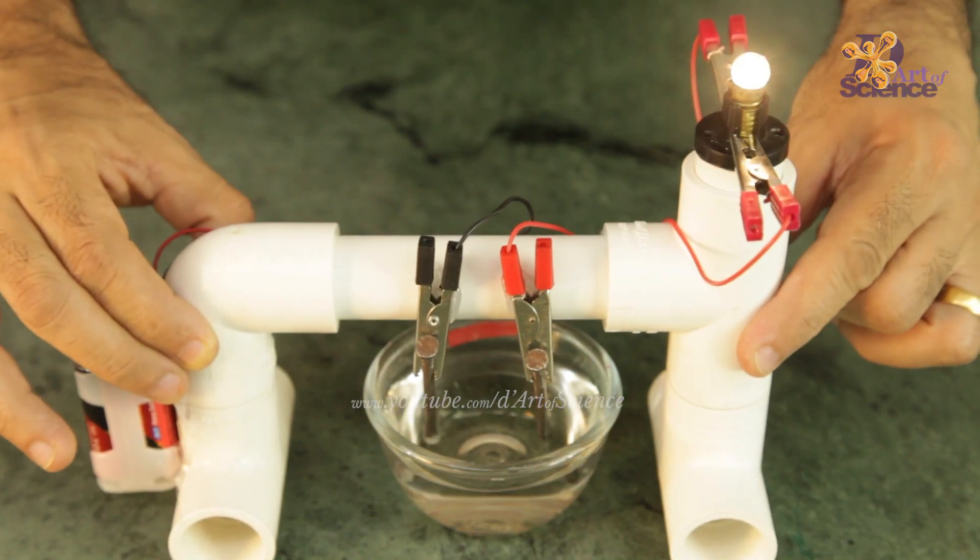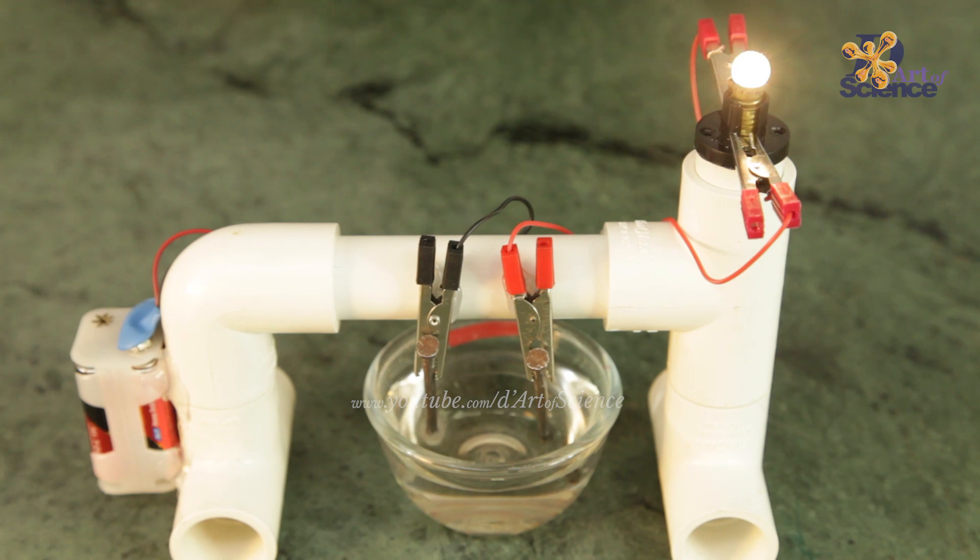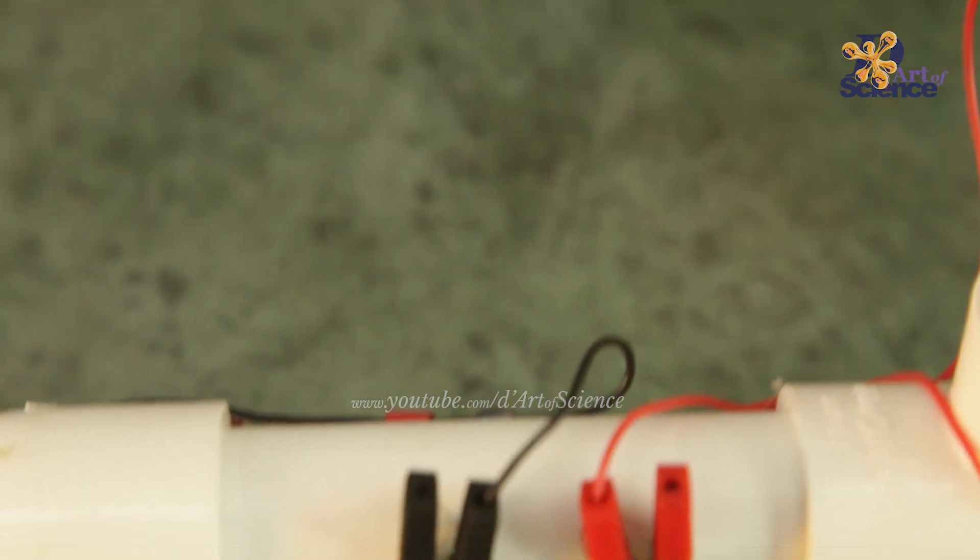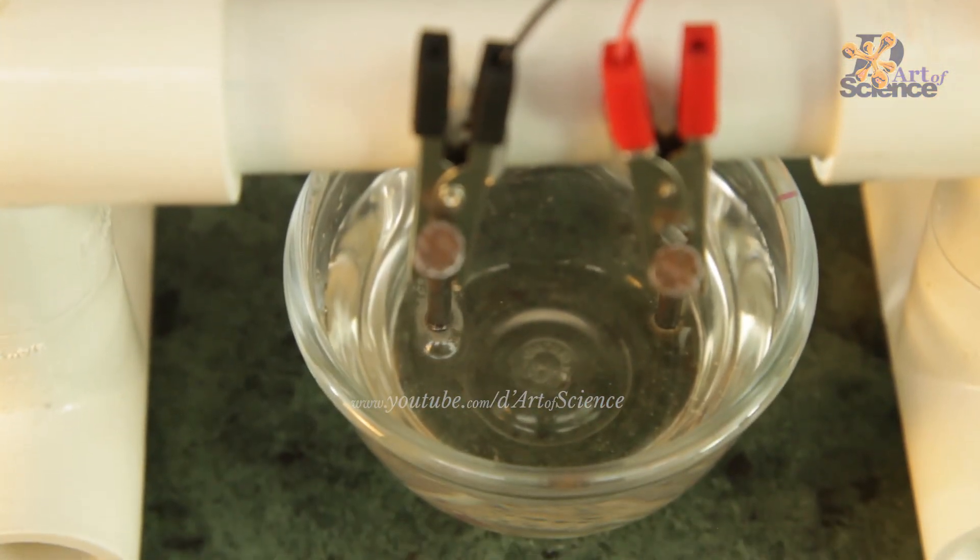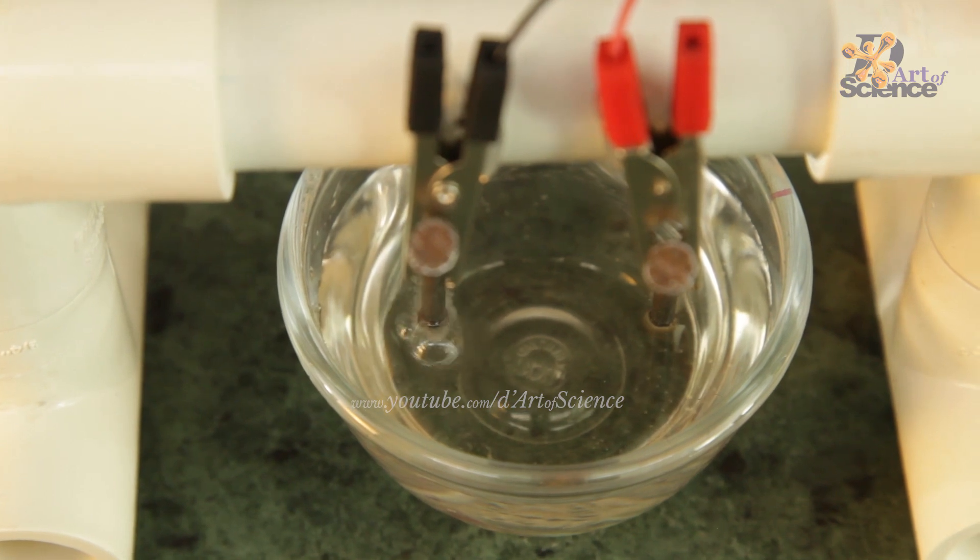For example of a chemical effect, when electricity is passed through electrodes in acidified water, the water decomposes into the two elements it's made of, oxygen and hydrogen.